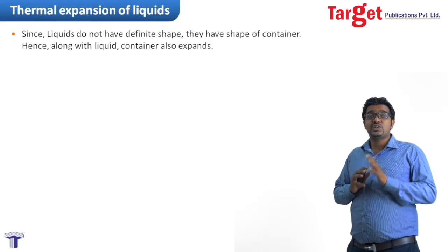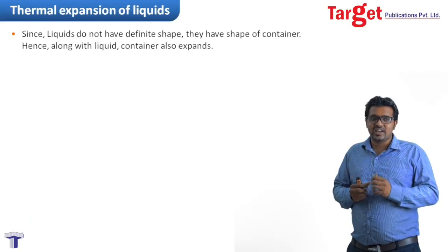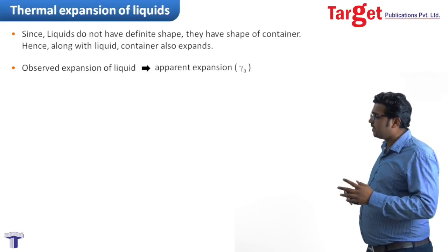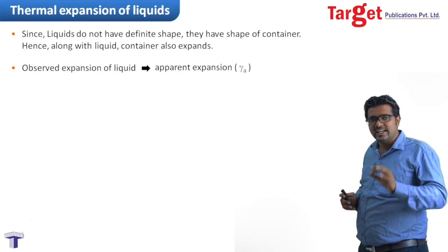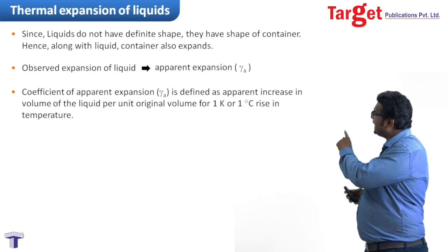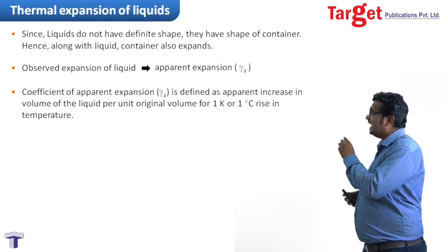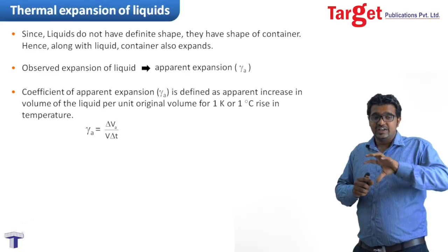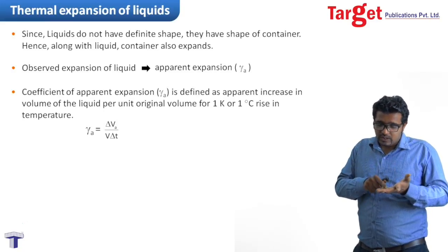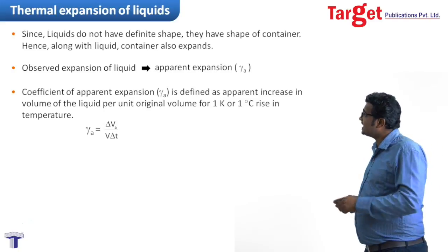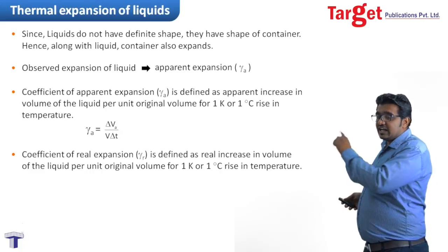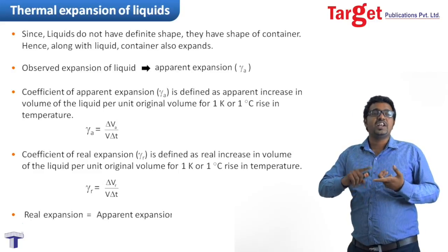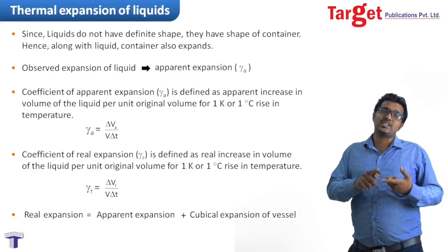What happens in liquids? Liquids do not have any particular shape; they take the shape of their container. Hence, along with the liquid, the container also expands. The observed expansion of liquids is known as Apparent Expansion, given by lambda A. The Coefficient of Apparent Expansion is defined as apparent increase in volume per unit original volume per degree rise in temperature. But not only the liquid's volume increases — the container also expands. Hence, Real Expansion is the addition of Apparent Expansion and Cubical Expansion of the vessel, defined as real increase in volume per unit original volume per degree rise in temperature. Real Expansion is the sum of Apparent Expansion and Cubical Expansion of the vessel.